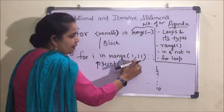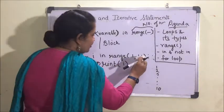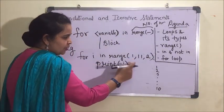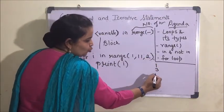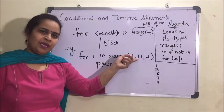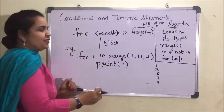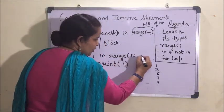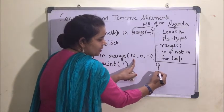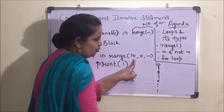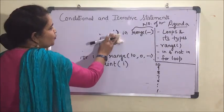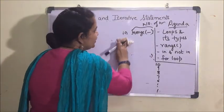We can also use a step value. For range(1, 11, 2), the output will be 1, 3, 5, 7, 9 — since 11 is exclusive. For reverse counting we write range(10, 0, -1), which will print 10, 9, 8, 7 down to 1. This is a reverse loop.